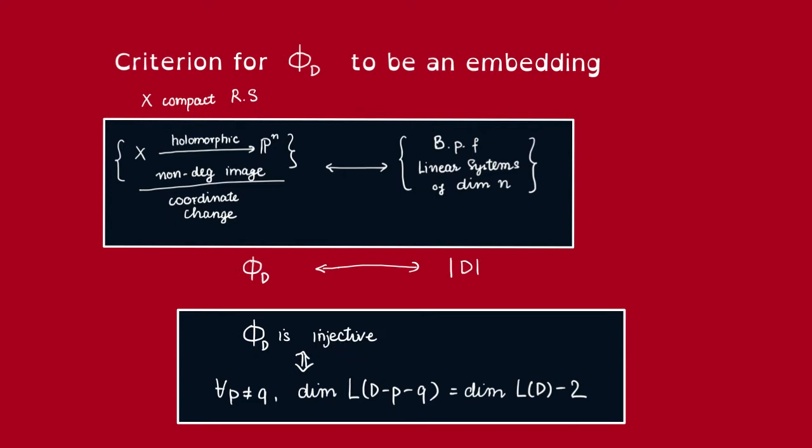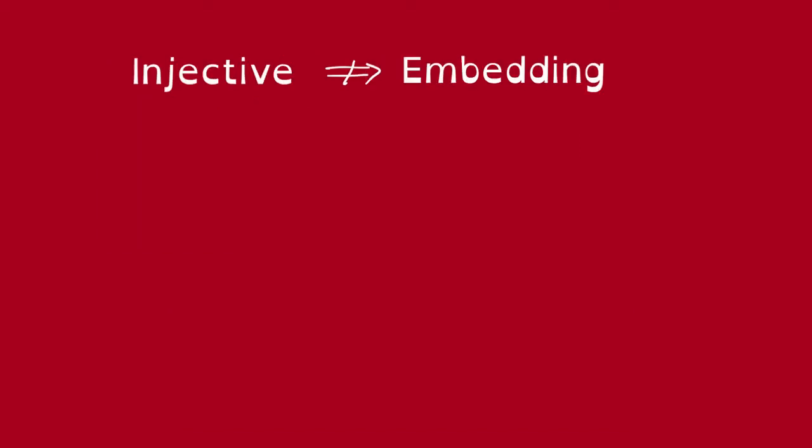Remember, we want to rephrase everything about the map φ_D in terms of Riemann-Roch spaces so that we can use tools from linear algebra. However, that's not the end of the story yet, because it turns out that injectivity does not imply being an embedding. In particular, being injective on points doesn't imply being injective on tangent spaces necessarily.